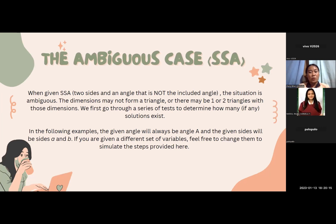Okay, let's proceed to the ambiguous case. When given SSA or two sides and an angle that is not included, the situation is ambiguous. The dimensions may not form a triangle, or there may be 1 or 2 triangles with those dimensions.